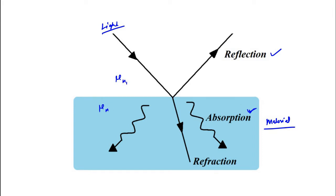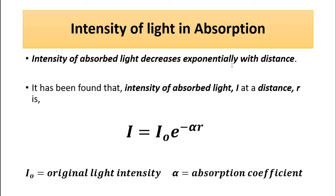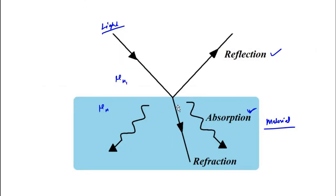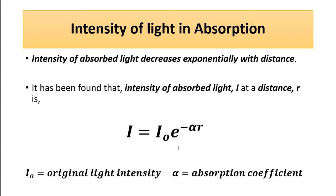The decrease in intensity of light is dependent on the distance the light travels from the surface. Let us say light strikes a material at a point and then it undergoes absorption; the distance from the surface is r. The original intensity at the surface is I₀, and we want to calculate the intensity after traveling through a distance r. The intensity of light after traveling a distance r through the material is given by: I = I₀ e^(−αr).